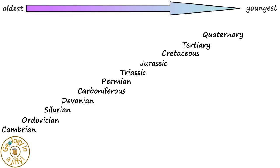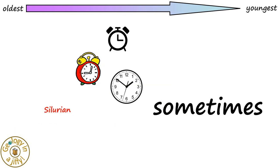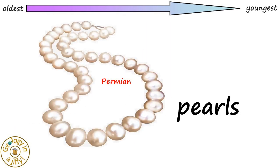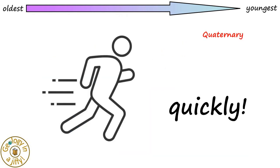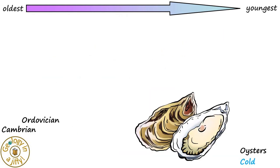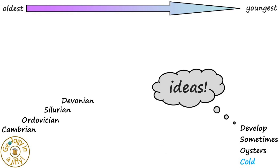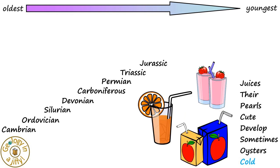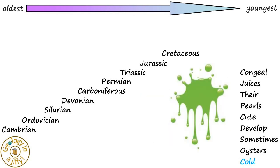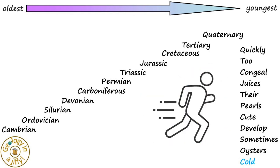Cold oysters sometimes develop cute pearls. Their juices congeal too quickly. The Cambrian, the Ordovician, the Silurian, the Devonian, the Carboniferous, the Permian, the Triassic, the Jurassic, the Cretaceous, the Tertiary, and the Quaternary periods.